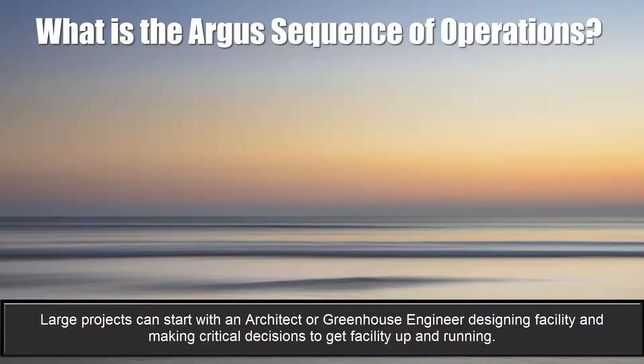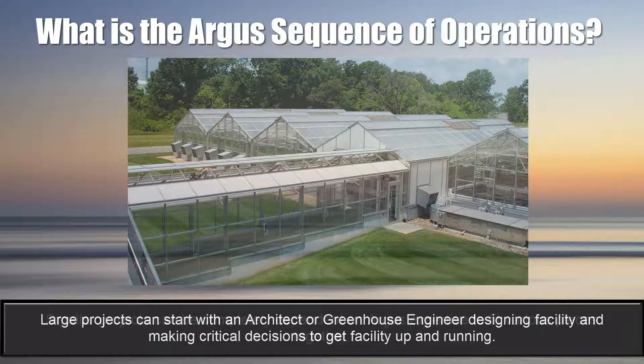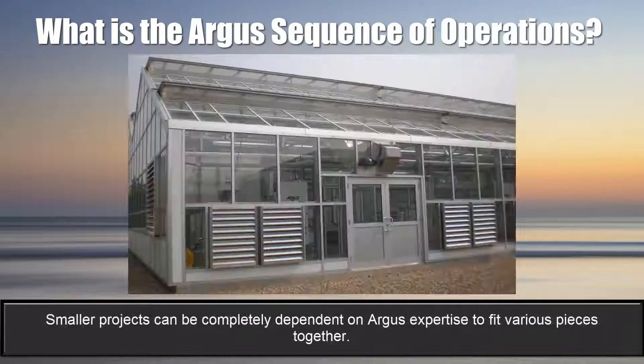It's important to remember that each control system is different. Larger projects may start with an architect or greenhouse engineer designing the facility and calculating many of the critical decisions required to get the facility up and running. Other smaller projects could be completely dependent on Argus expertise to fit the various pieces together.